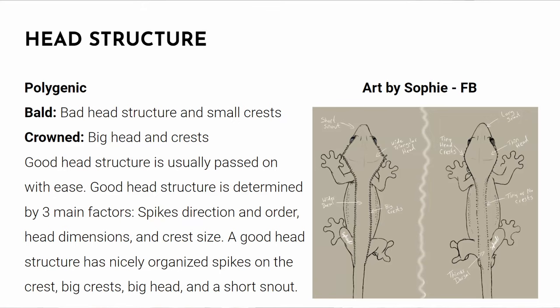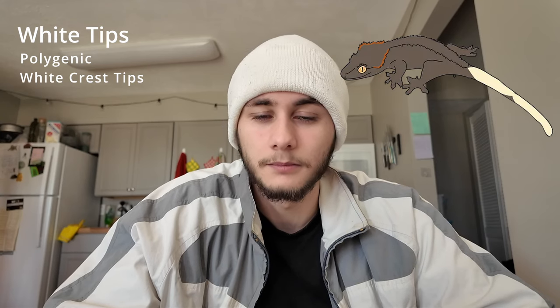The crowned gene is thought to be passed on pretty easily, which is great because we want crested geckos with nice spikes, nice head size, and a nice head shape — short snout and big crests. There's also the white tip trait, which is polygenic and creates white tips on the crested gecko crests — similar to sable but not related. Orange tips is also polygenic and the same thing but with orange. Finally, fringe is polygenic — a white line on the back of the leg — and kneecaps is also polygenic, a white line on the knee of the crested gecko.